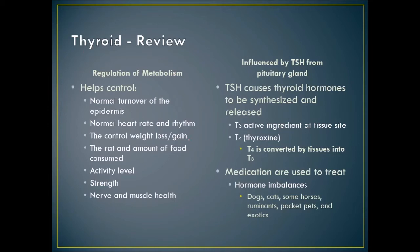T4 is converted by the tissues to T3. Medications used to treat thyroid conditions supplement or reduce T4. We treat hormone imbalances in dogs, cats, horses, ruminants, pocket pets, and exotics. Goiter occurs when there is inadequate iodide in the diet, preventing the thyroid from producing T3 or T4, causing the thyroid gland to enlarge. We almost never see this anymore if animals receive a commercial diet.